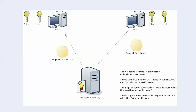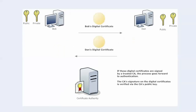The digital certificates are going to go back to Bob and Dan in this situation. They're known as identity certificates and public key certificates. Once these two devices have their digital certificates, the process of Bob and Dan chatting securely with each other can actually go on to the authentication process — they haven't really authenticated yet.